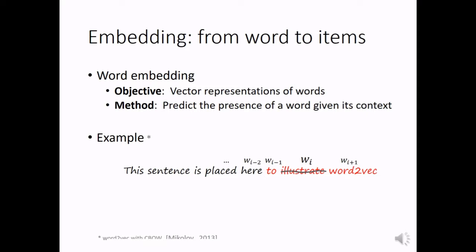Let's start from word embedding. The objective of word embedding is to find vector representations of words, and the method is to predict the presence of a word given its context. For example, we have this sentence, and we take out the word at position i, illustrate, and then we use the vector representations of the word before it and the word after it to predict whether the word in the middle is illustrate.